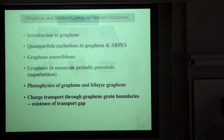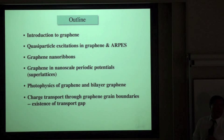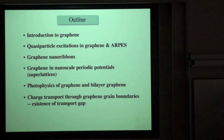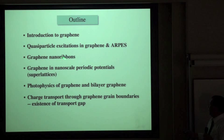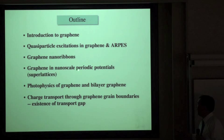The outline of the talk: I will begin with a brief introduction to the physics of graphene, then discuss electronic excitations or quasi-particle excitations in graphene and how they manifest in angle-resolved photoemission experiments. Then we'll discuss the electronic, magnetic, and optical properties of graphene nanoribbons, and graphene superlattices in the presence of a nanoscale slowly varying periodic potential.